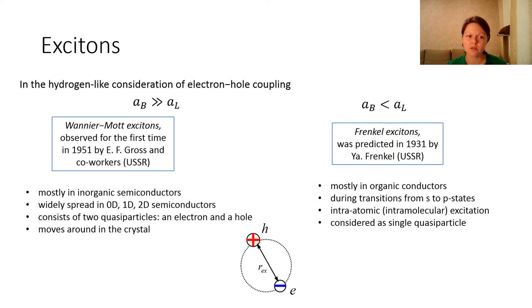Wannier-Mott excitons are mostly found in inorganic semiconductors and are widely spread in zero-dimensional, one-dimensional, and two-dimensional semiconductors. Wannier-Mott excitons are considered as consisting of two quasiparticles, an electron and a hole, which are moving around in the crystal.